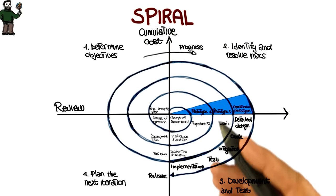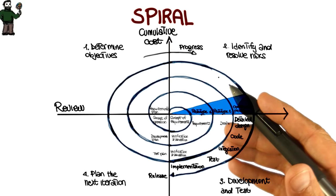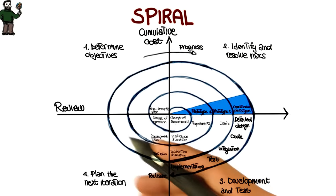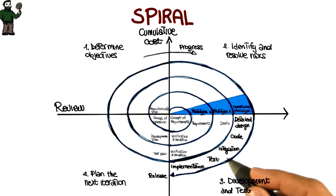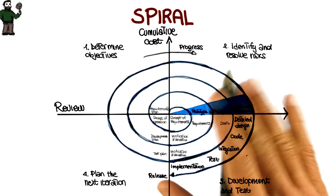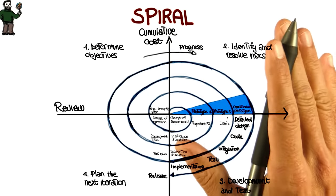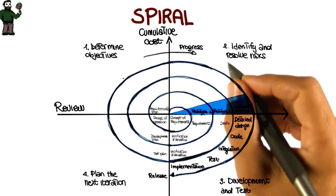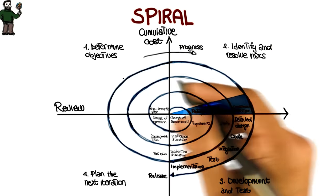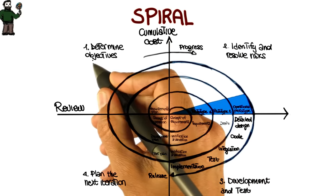This diagram has become very, very popular, and you probably saw it either in this form or one of the many variations of the diagram. I'm not going to discuss all of the details of the spiral model, but I just want to give you an idea of its main characteristics. The spiral model is an incremental risk-oriented life cycle model that has four main phases.